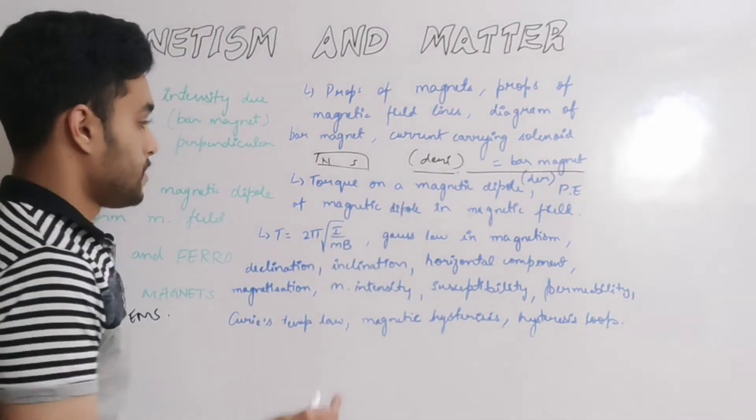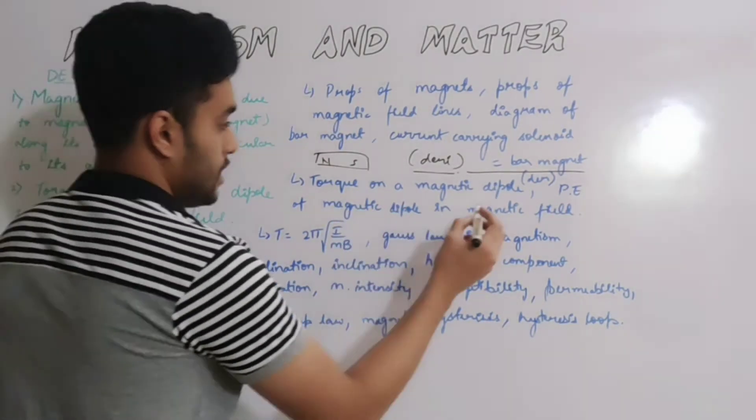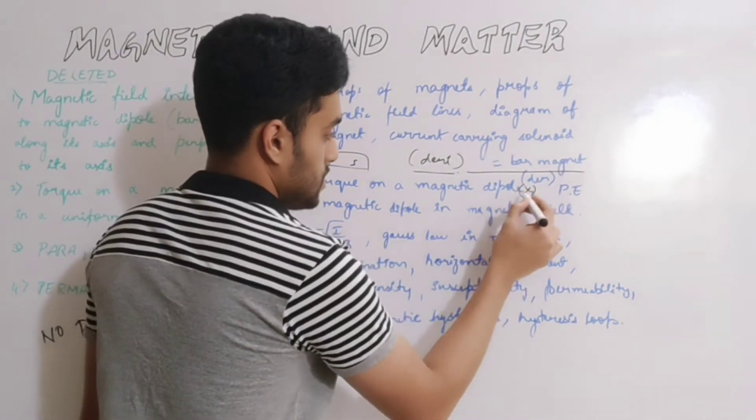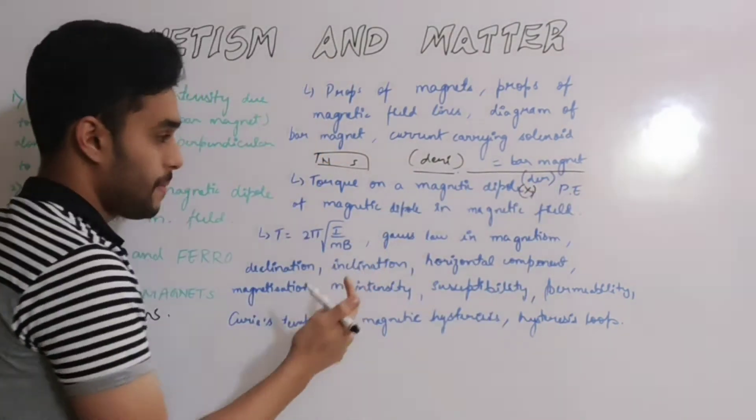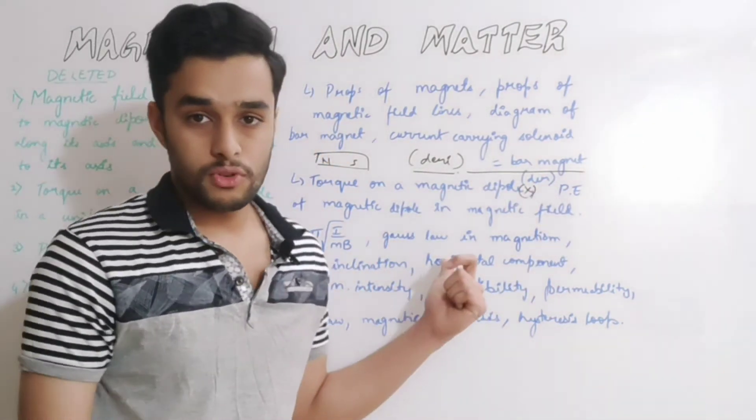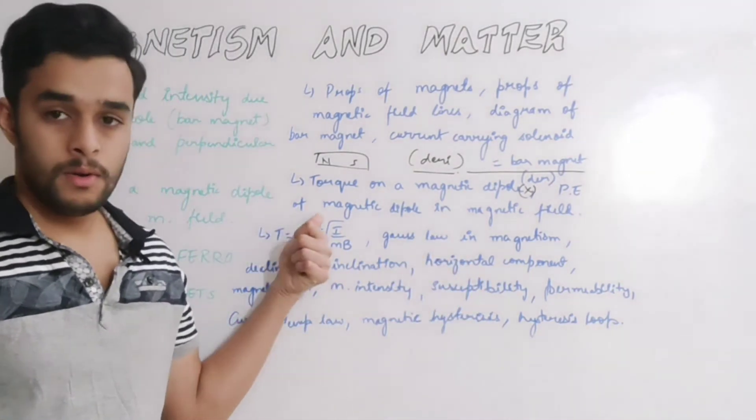Torque on a magnetic dipole topic is deleted, so it probably won't come. But potential energy of a magnetic dipole in magnetic field, this small derivation you need to know for three marks or two marks, it's important.